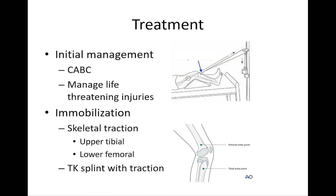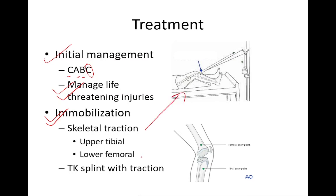The initial management of shaft of femur fractures in adults includes securing the cervical spine, airway, breathing, and circulation, and managing life-threatening injuries. Immobilization of the fracture provides pain relief, reduces blood loss, and helps in patient mobilization. This can be done using skeletal traction via upper tibial or lower femoral traction, or a Thomas knee splint with or without traction.